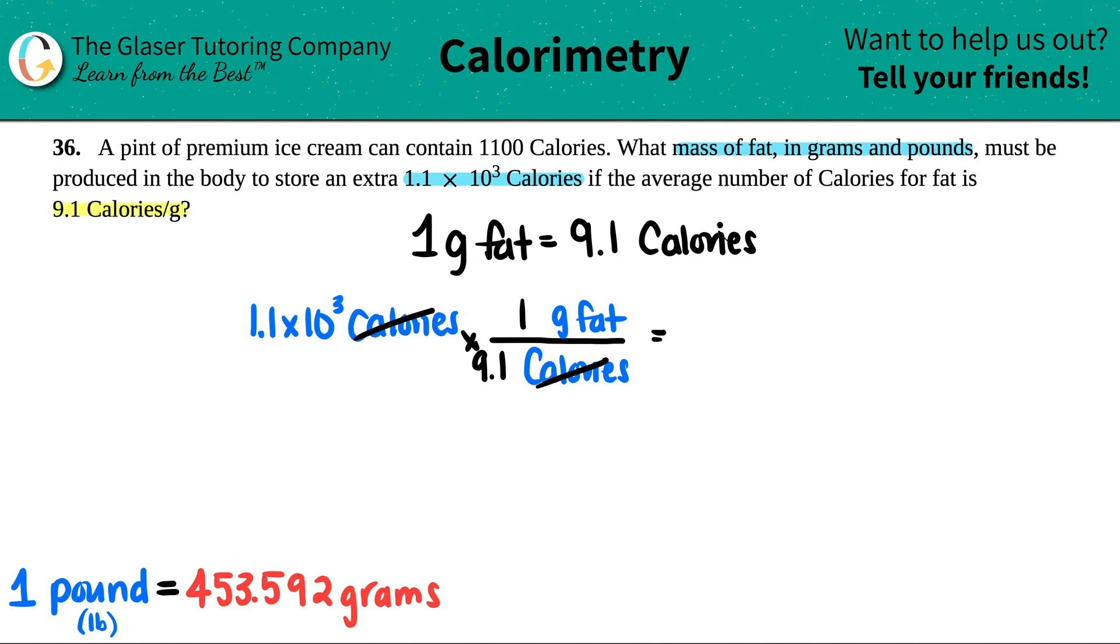1.1 times 10 to the third divided by 9.1, I get roughly 121. Technically it should be two sig figs, so 1.2 times 10 to the second grams of fat. That's the first part.